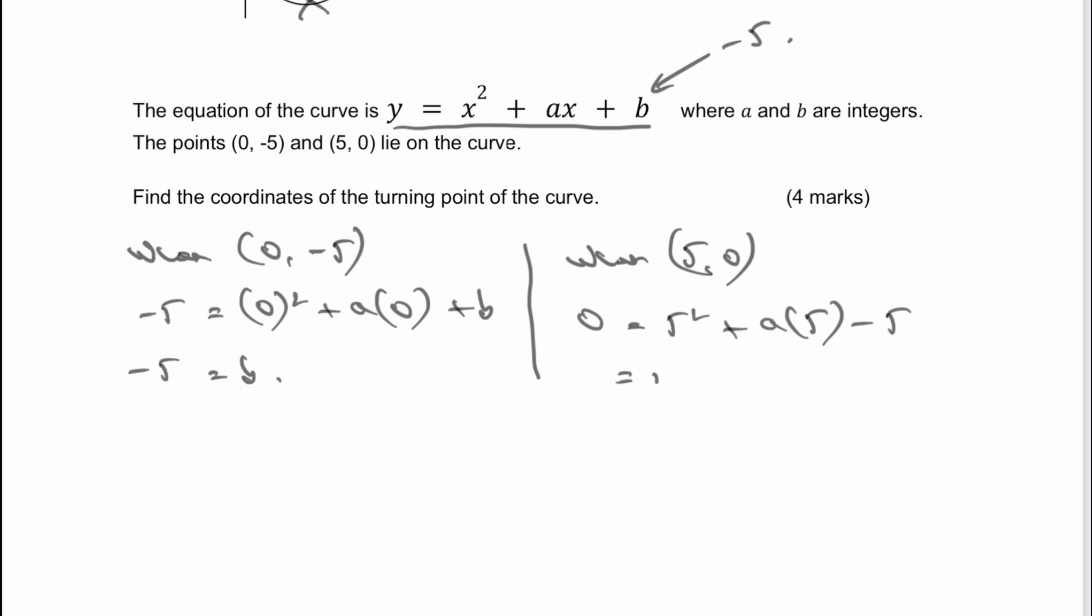So therefore I end up with 25 plus 5a minus 5. I could just solve for a by bringing 25 and -5 over to the left-hand side. I'm going to get -20 equals 5a. So therefore a, in this particular case, must be -4 if I divide through. So now I've got my value of a, which is going to be -4.